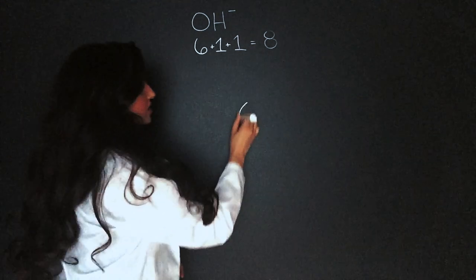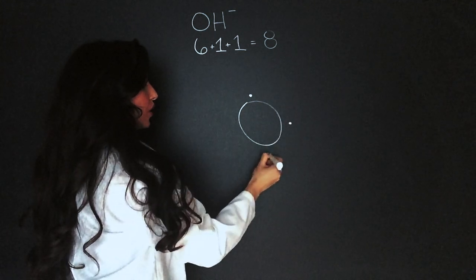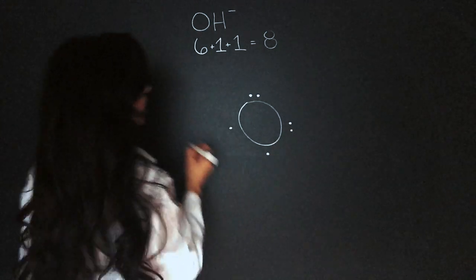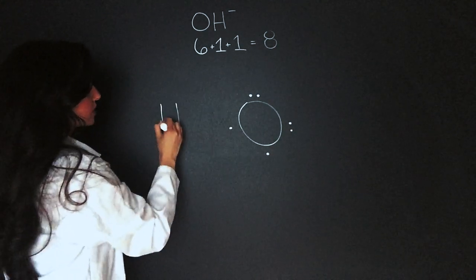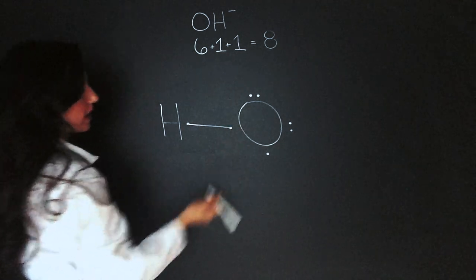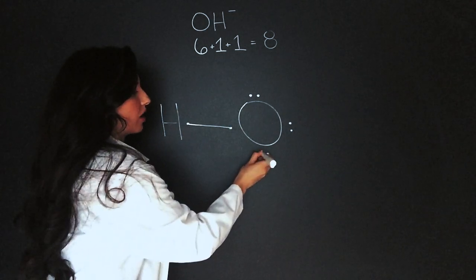So let's draw oxygen. It's supposed to have six. One, two, three, four, five, six. And hydrogen is supposed to have one. Now these two will bind and then we know there's one more electron which will be sitting on the oxygen.